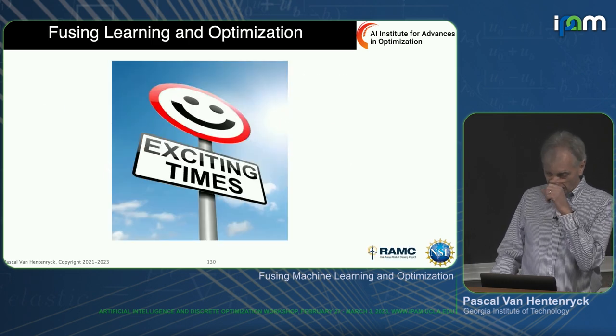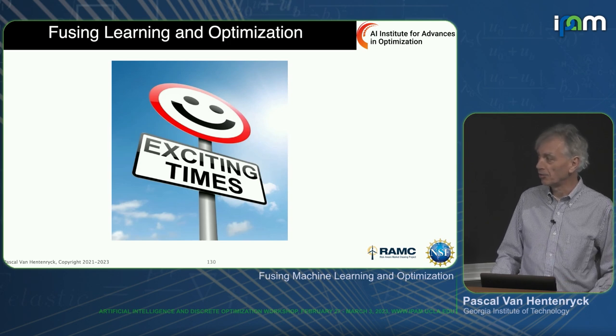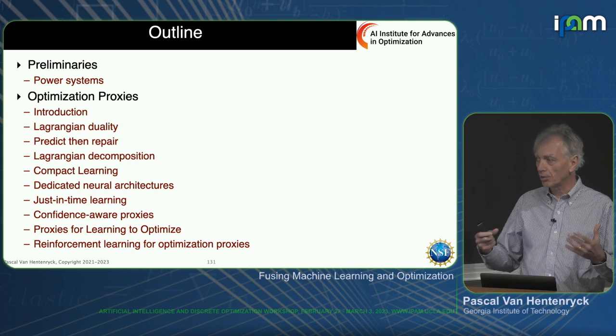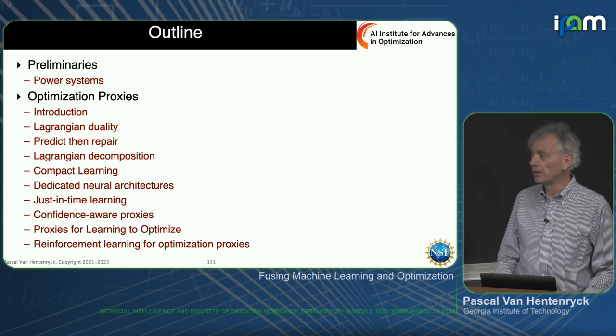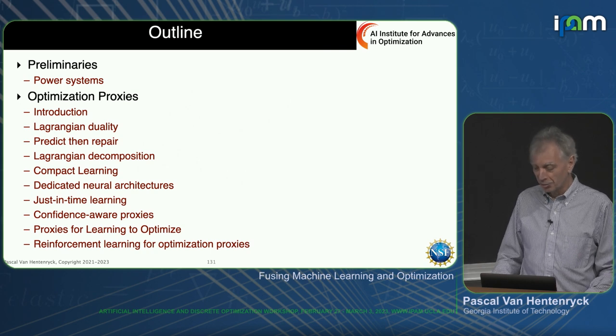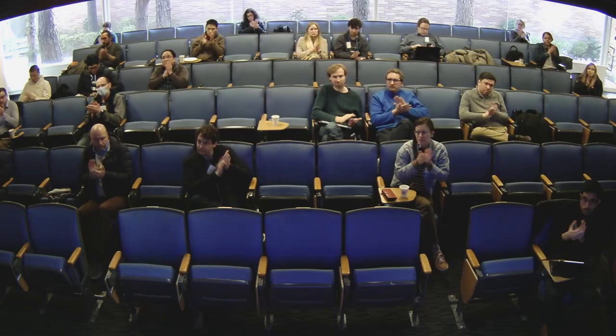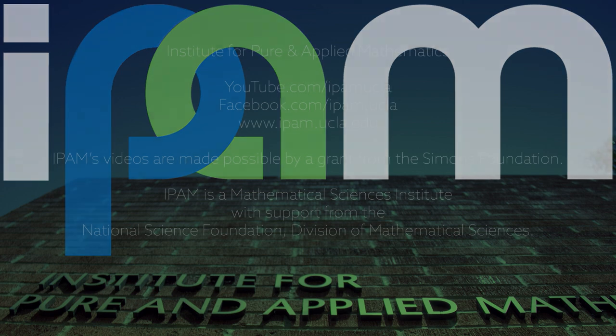In conclusion, there are a lot of exciting times ahead. These are still baby steps. We can use optimization proxies to solve problems that could not be solved independently by machine learning or optimization alone. We use insights from optimization inside machine learning, and machine learning to improve optimization algorithms. There is much more to be done in this area. Thank you very much.